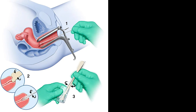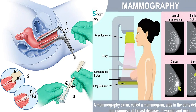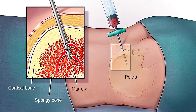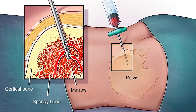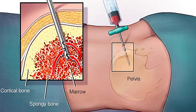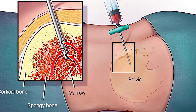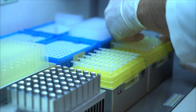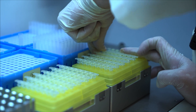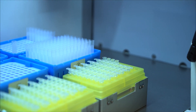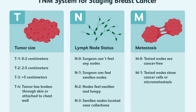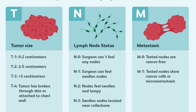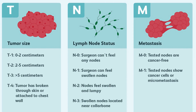Tests such as Pap tests and mammograms can be used to screen for certain types of cancer in their early stages, when they may be more treatable. A biopsy is a procedure in which a small sample of tissue is removed from the tumor and examined under a microscope, helping to determine the type of cancer and how aggressive it is. Once cancer has been diagnosed, additional tests may be performed to determine the extent of the disease — a process known as staging — which is an important factor in determining the appropriate course of treatment.